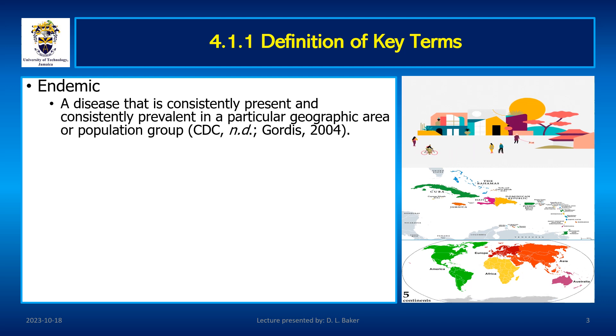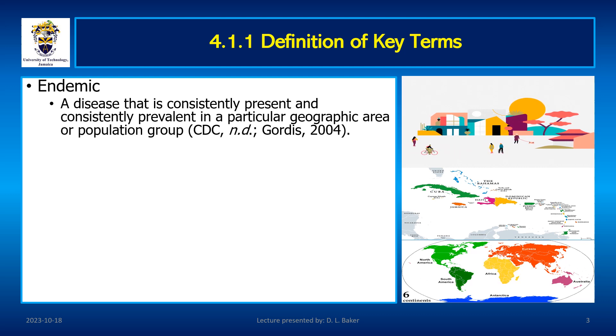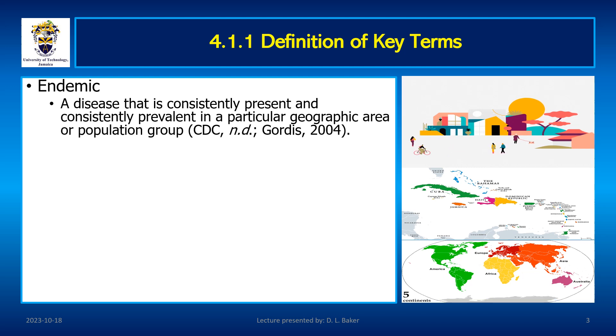Endemic diseases with epidemic potential include malaria, cholera, measles, hepatitis, meningococcal meningitis.